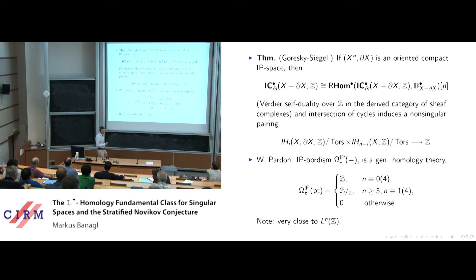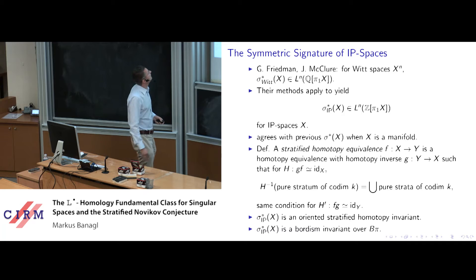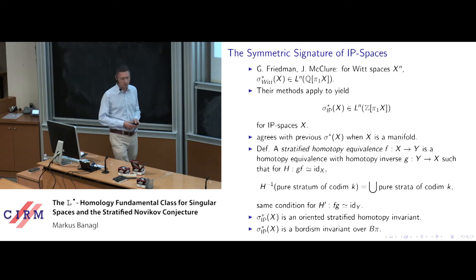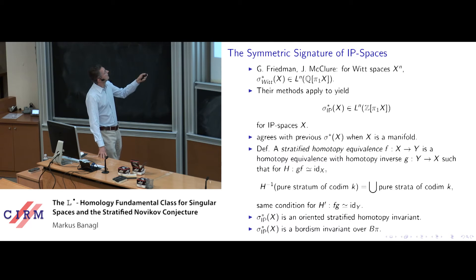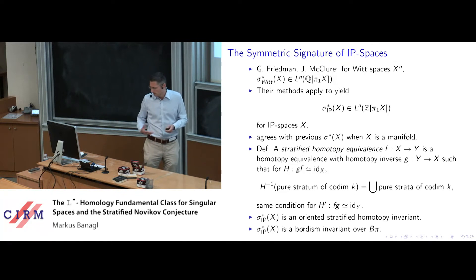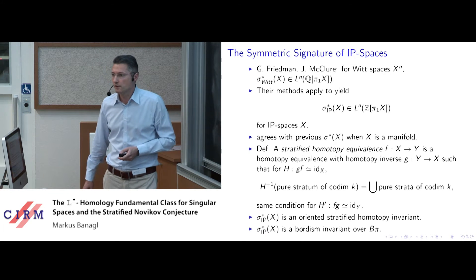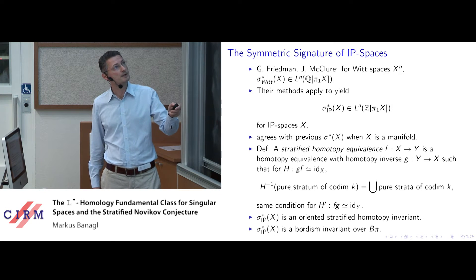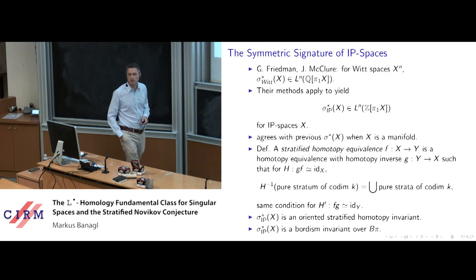As we saw on an earlier slide, once you have such a map, it is very easy to get an L homology fundamental class just by taking the image. So the main task is to construct a map from IP bordism to L theory. A symmetric signature for Witt spaces or IP spaces has already been defined in the work of Greg Friedman and Jim McClure. They associated to a Witt space a symmetric signature in the symmetric L-group of the rational group ring. Their methods equally well apply to IP spaces, in which case you get a symmetric signature for the L groups of the integral group ring, which certainly agrees with the Mischenko-Ranitzky symmetric signature in the case of a manifold.